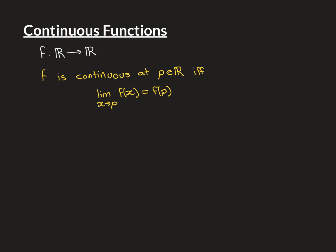Here's the definition. We say that the function f is continuous at a point p in the domain — so p is an element of the real numbers — if and only if: (1) the limit as x approaches p of f(x) exists, and (2) that limit is equal to the value of the function at p.